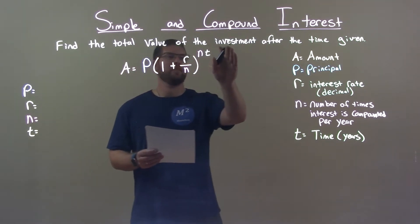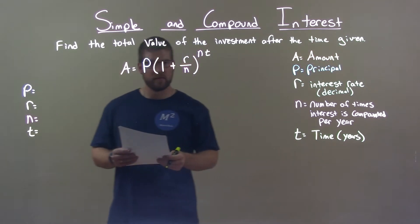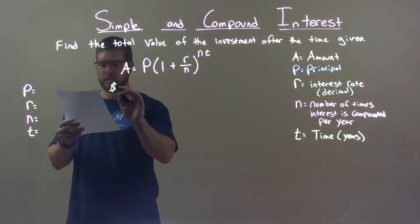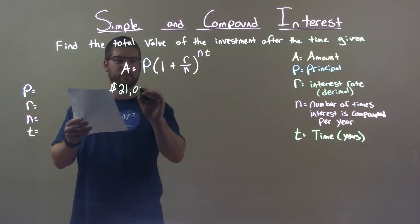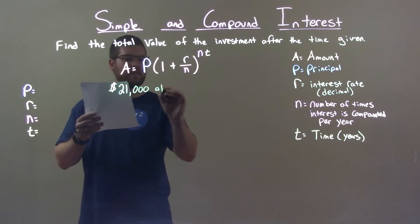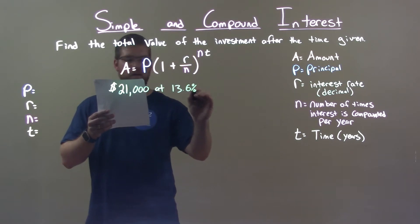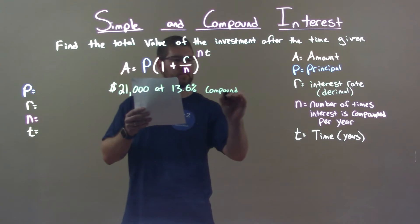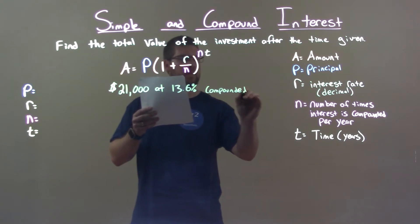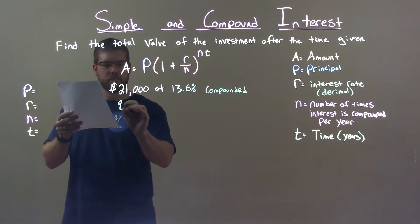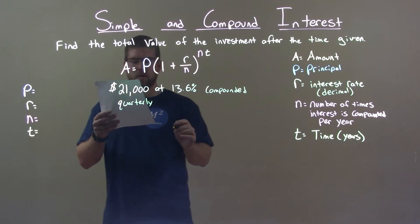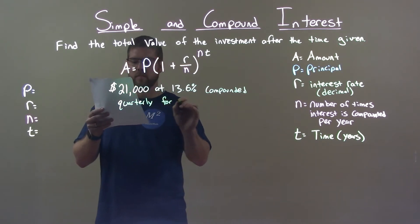Find the total value of the investment after the time given. If I was given this problem, $21,000 at 13.6% compounded quarterly for 4 years.